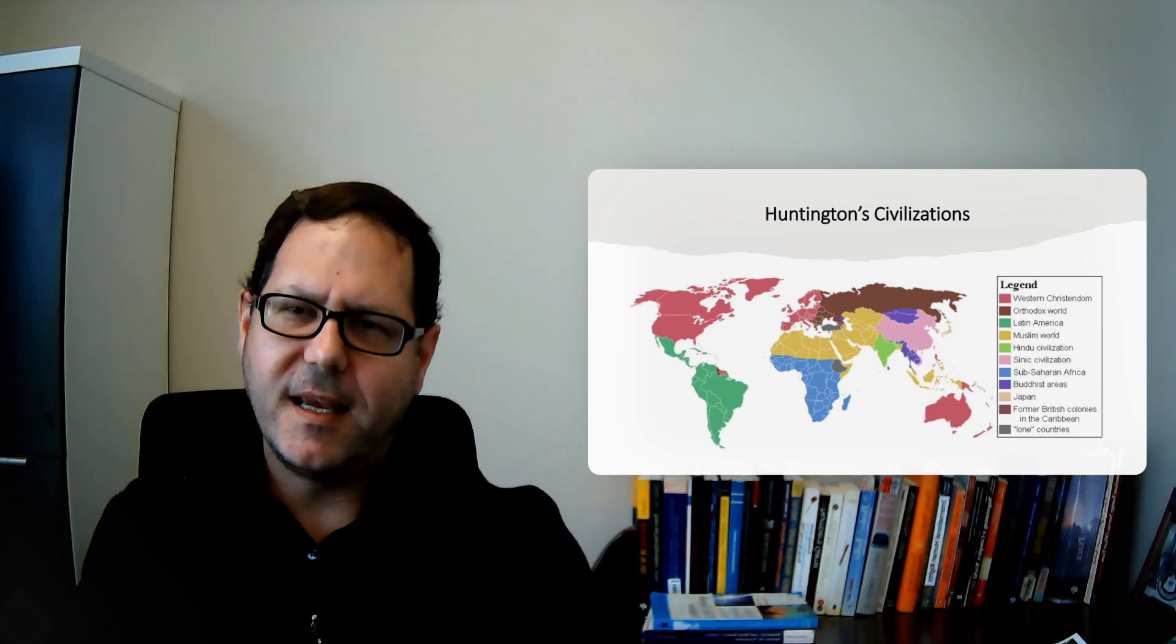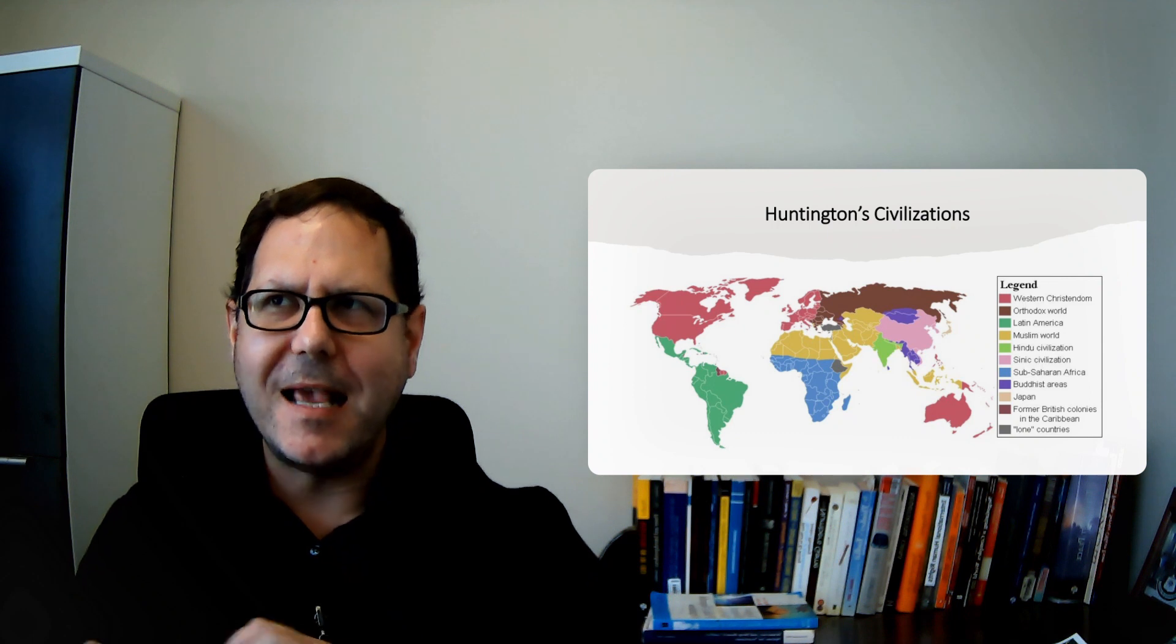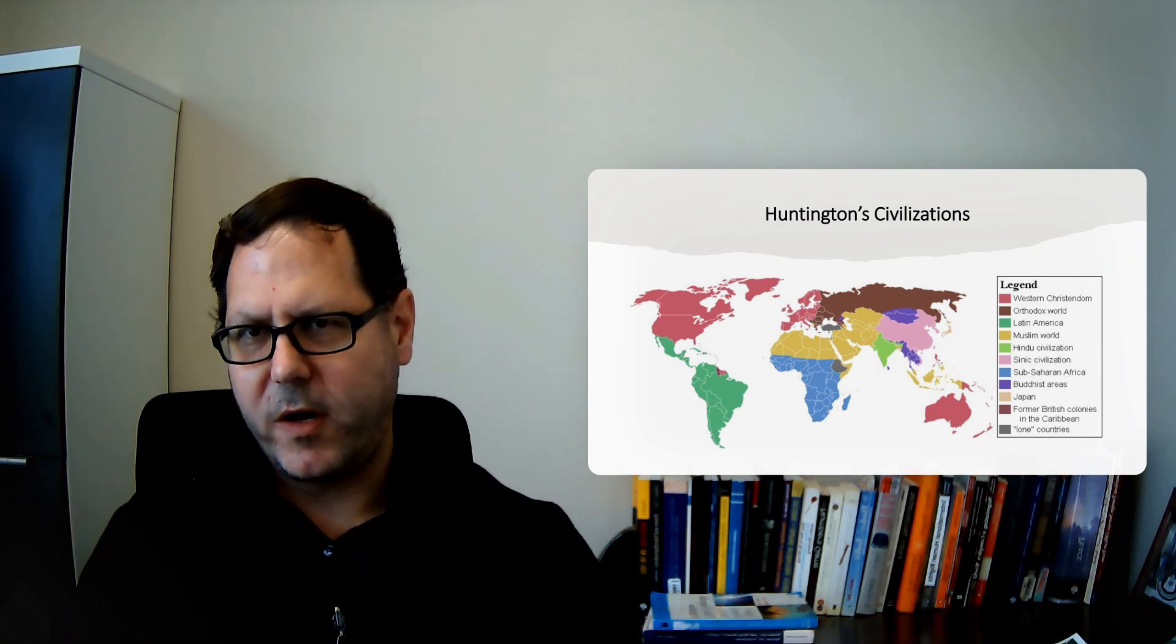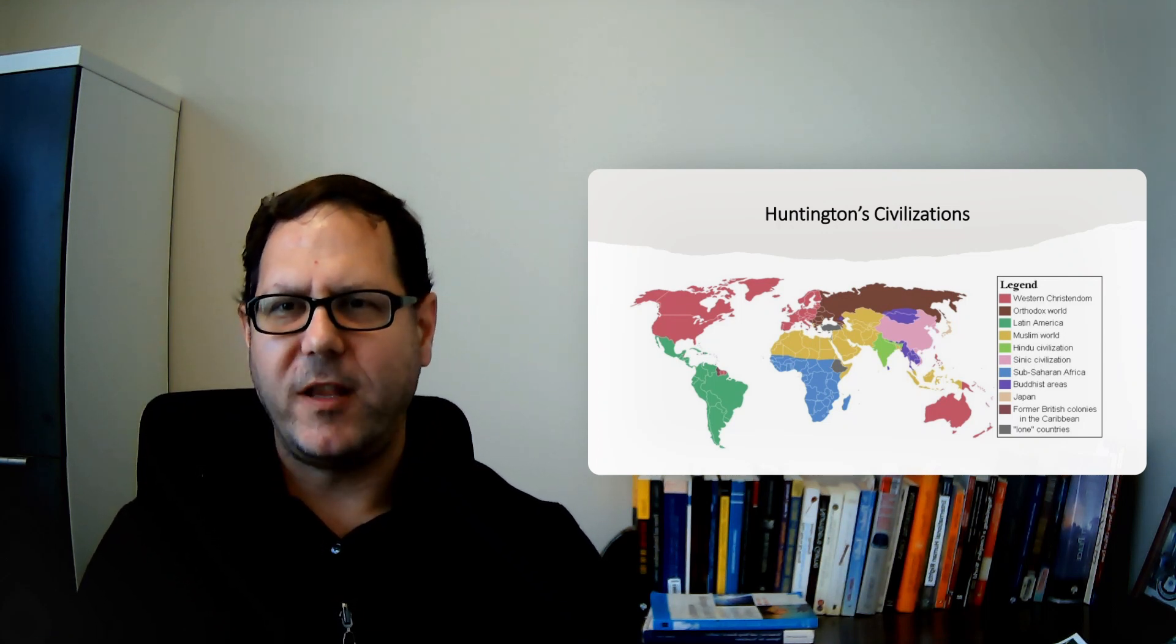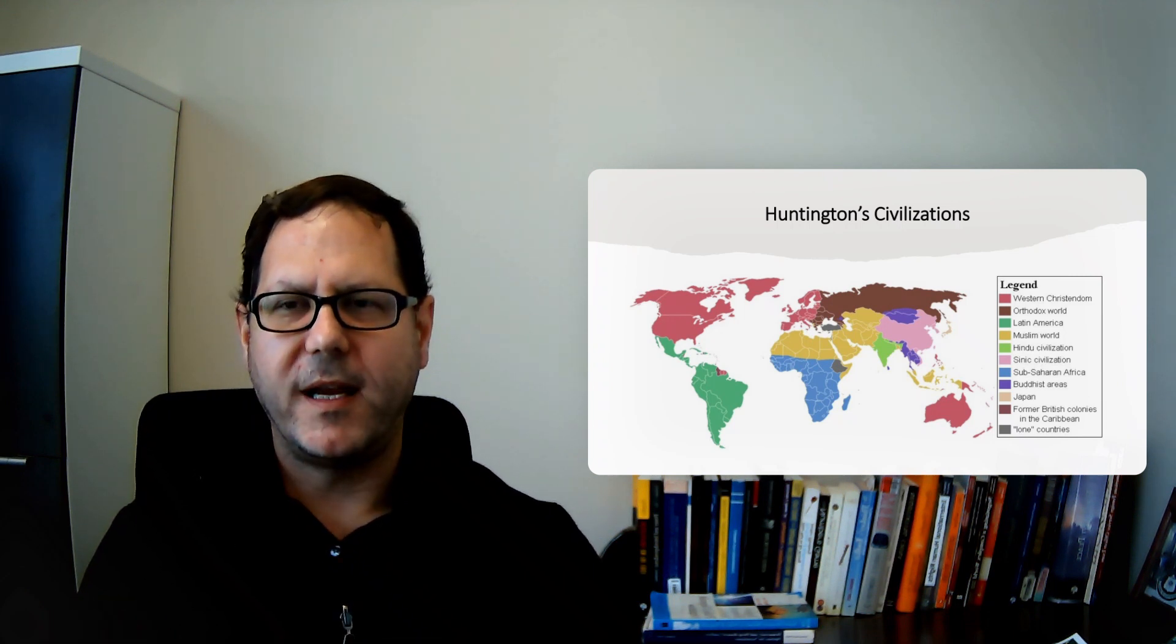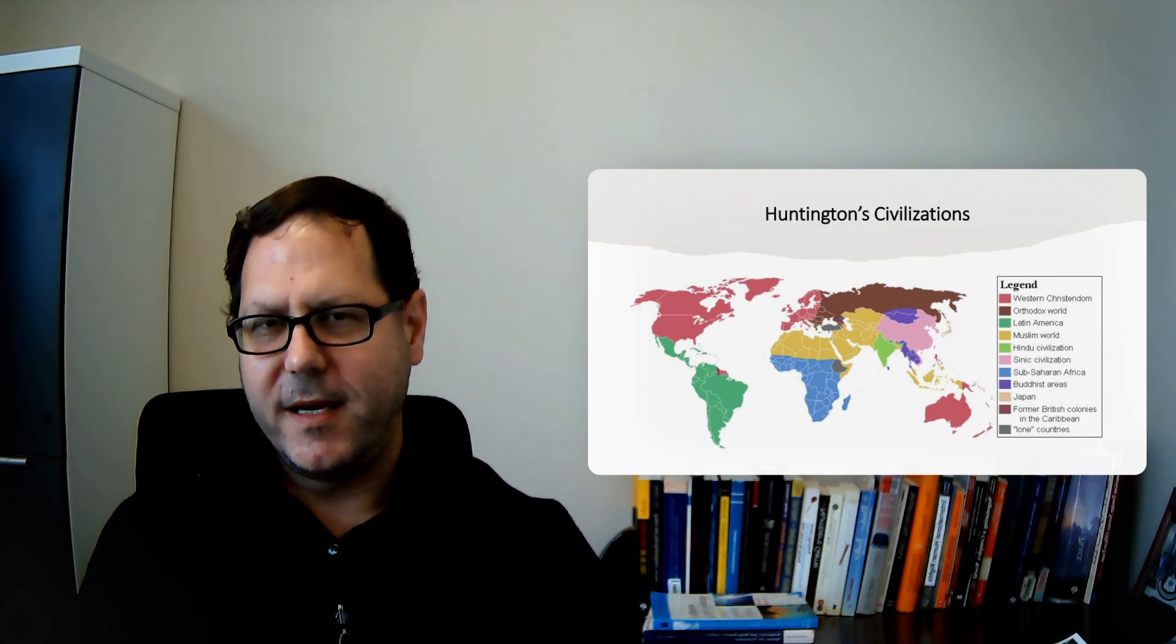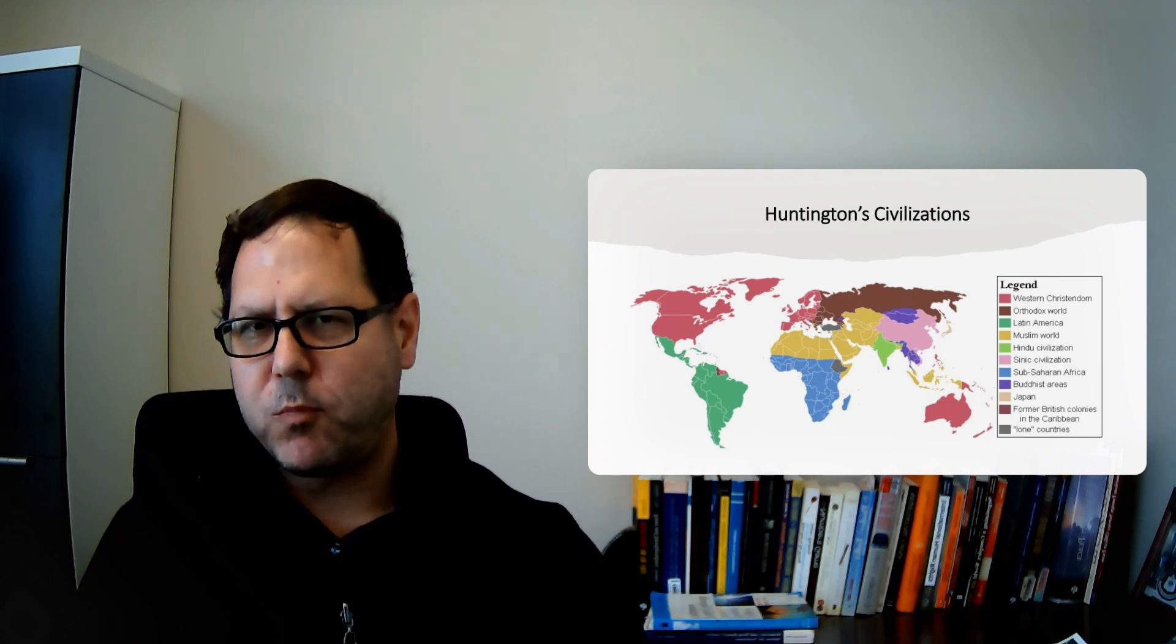And so one of the things that I think is an important takeaway from clash of civilizations is that as a theory it seems to tell a reasonably compelling story but when we drill down and look at the data it doesn't seem to actually help us to explain where we see conflicts, why we see conflicts, and because it's not useful in terms of explaining the patterns in the data, most political scientists, most social scientists look at this and say it's a good theory to be aware of but it's probably not going to be all that useful for us.